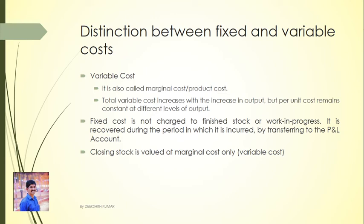Per unit, the variable cost remains constant. For example, if the variable cost is 10 rupees per unit, for 100 units the total variable cost is 10 × 100 = 1000. The amount of cost per unit remains constant at different levels of output.